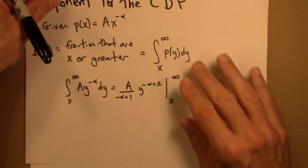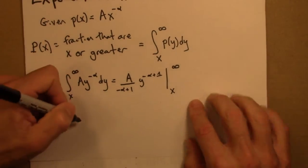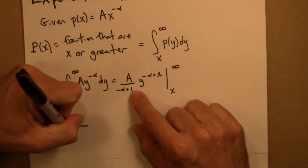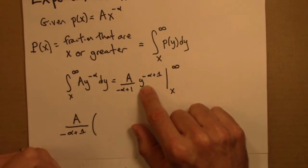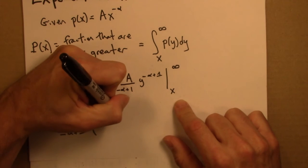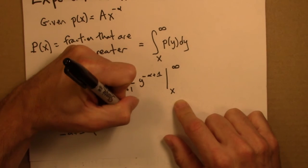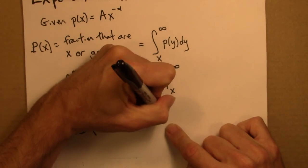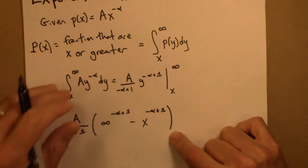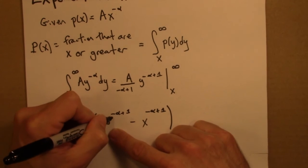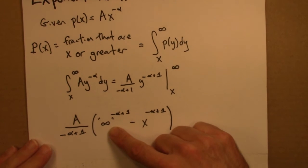Alright, pushing on. I'll leave this out front. And then we need to plug in infinity and x for y. So what do I mean by this? Well, we can't really plug in infinity because infinity isn't really a number. So maybe I should put this in quotes. It makes mathematicians feel a little bit better.